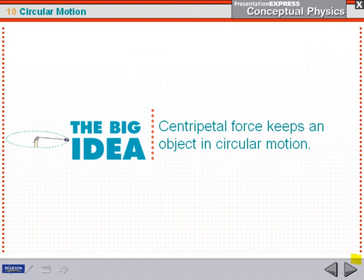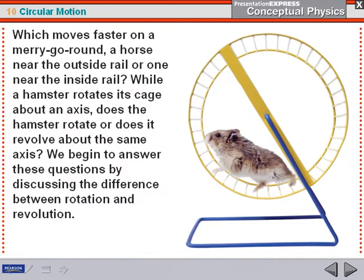Welcome to the Chapter 10, Section 1 podcast. Chapter 10 is about circular motion, and the main point is that centripetal force keeps an object in circular motion. We're going to answer questions like which moves faster on a merry-go-round: a horse on the outside rail or one on the inside rail?